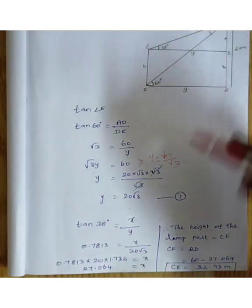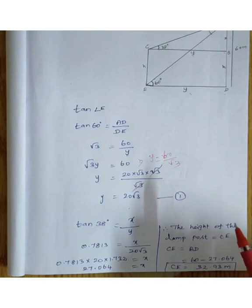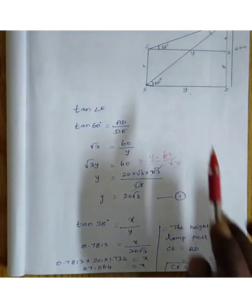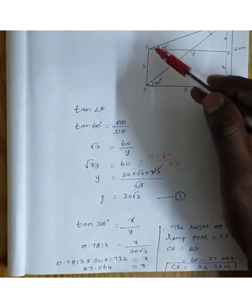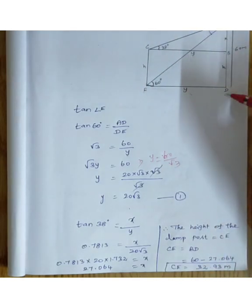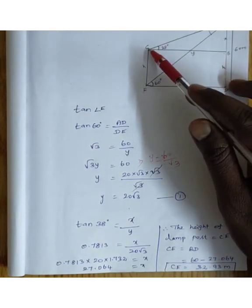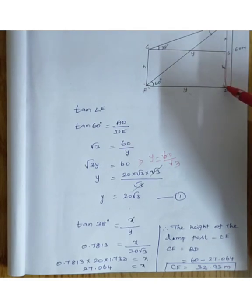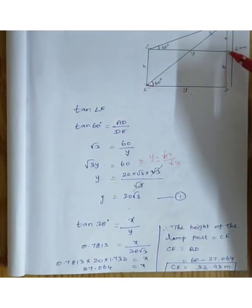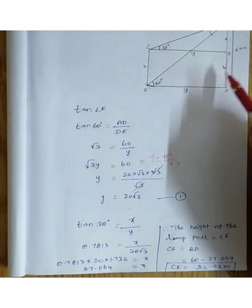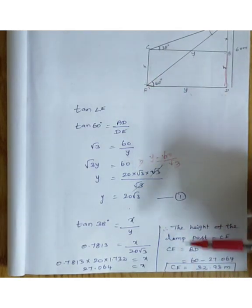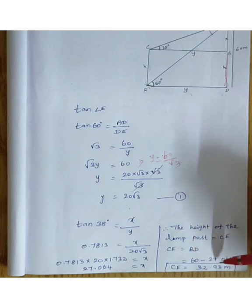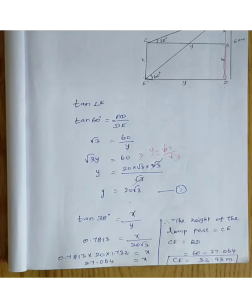Now for the height of the lamp post, the total height of the building is 60 meters, so the lamp post height equals 60 minus 27.064, which gives us 32.936 meters. That is the answer.